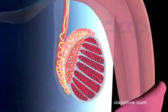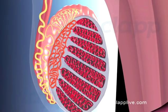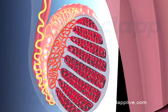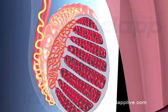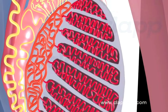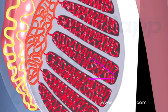The testis is enclosed in a dense fibrous coat called the tunica albuginea. Inward growth of the tunica albuginea divides the testis into around 200–300 lobules called testicular lobules. Each lobule consists of 1–3 highly coiled seminiferous tubules.